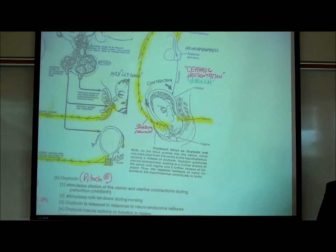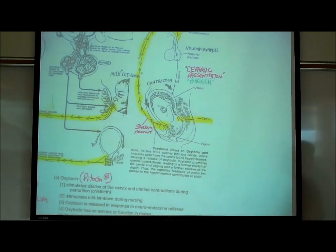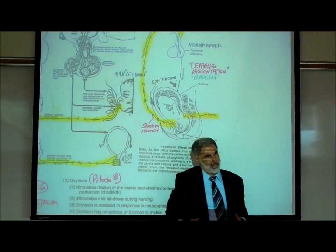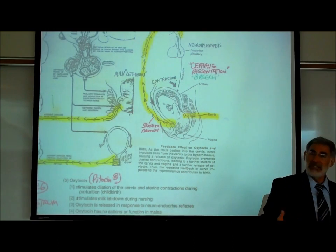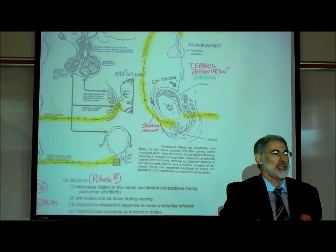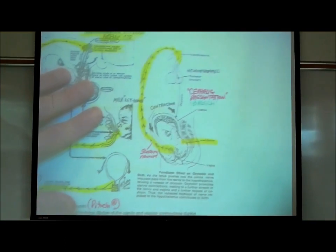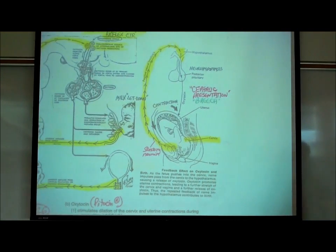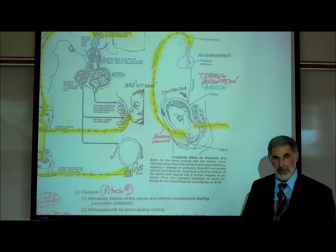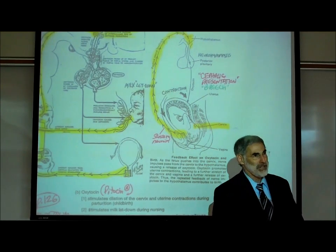Oxytocin not only causes the uterus to contract — we said it would cause any fluid in the mammary glands to squirt out. So why isn't anything squirting out of the mammary glands during childbirth? Because in most women there's no fluid in the mammary glands yet — so there's nothing to squirt out.